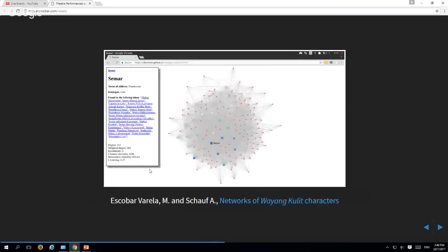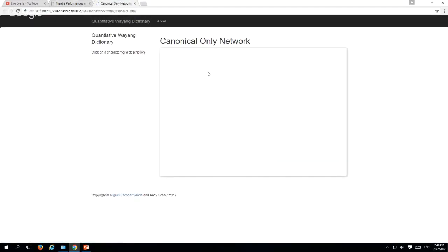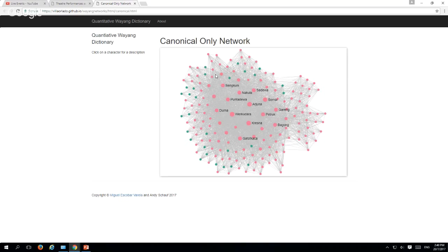Another example is a network analysis of these wayang kulit characters. Here, what we did for this particular project is that we found this co-occurrence network. A lot of people here have been speaking about network analysis as well. We were interested in seeing how these characters, when they tend to be in the same scene as another character, and what kind of patterns emerge. We see certain structures that are common that are often found in real-world networks. One thing that we were fascinated to see is that this particular network shares a lot of properties with real-world networks, maybe more so than a lot of other mythological networks that have been analyzed for the same kind of properties.